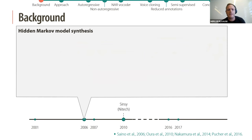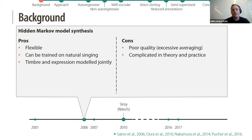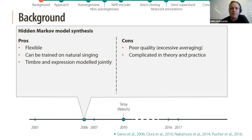An important year is 2010 when Sinsy was released, one of the more famous HMM-based singing synthesizers. Some pros of this approach are that it's quite flexible, can be trained on natural singing, and timbre and expression can be modeled jointly. However, quality is quite poor, especially due to averaging of the acoustic parameters, and it's a method that's quite complicated in theory and practice.